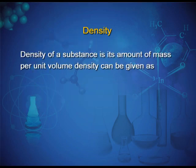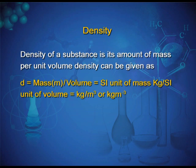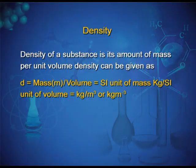Density of a substance is its amount of mass per unit volume. Density is given as D = mass/volume. The SI unit of mass is kg and SI unit of volume is m³, so the unit of density will be kg/m³.